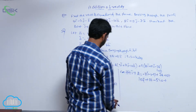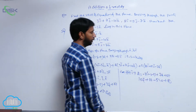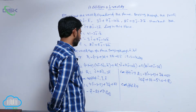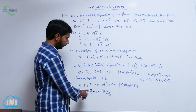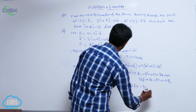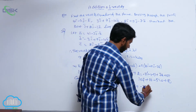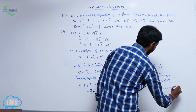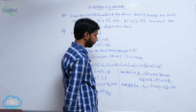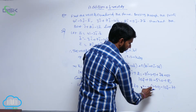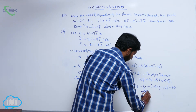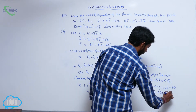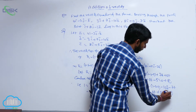The coefficient of k̂ gives -3 = -(1 - s - t) - 10s - 7t, which simplifies to -1 + s + t - 10s - 7t = -1 - 9s - 6t, giving -9s - 6t + 2 = 0. This is equation 3.